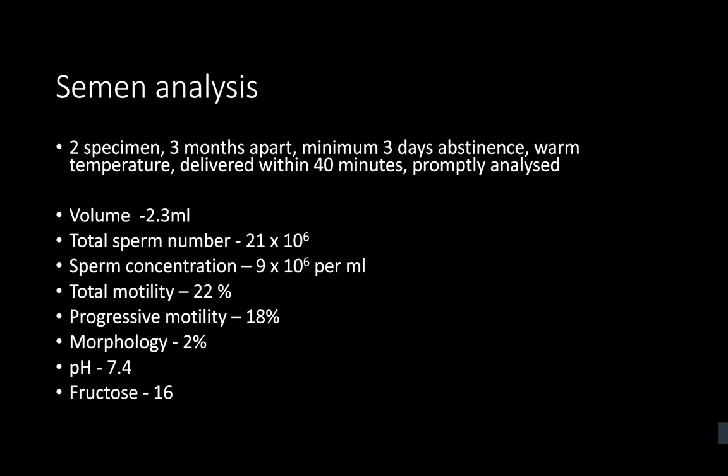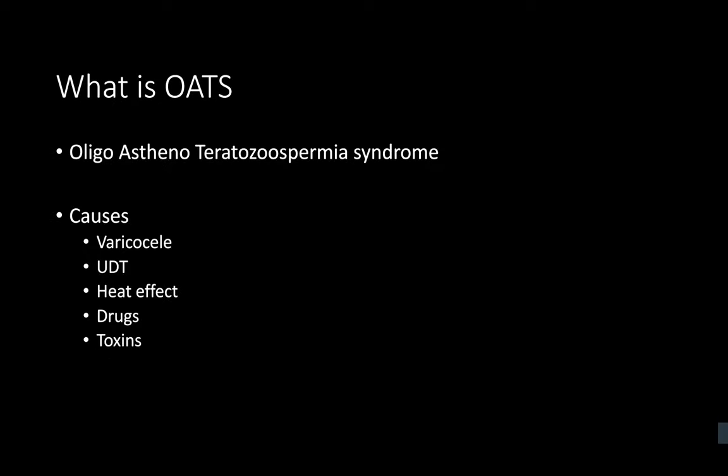OAT syndrome is the combination of oligozoospermia — reduced sperm concentration — asthenozoospermia — reduced motility — and teratozoospermia — reduction in normal forms. Causes can be idiopathic, or secondary to gonadotoxins, previous testicular or scrotal surgery, epididymitis, trauma or torsion.